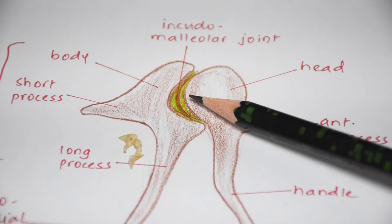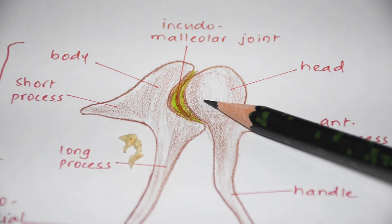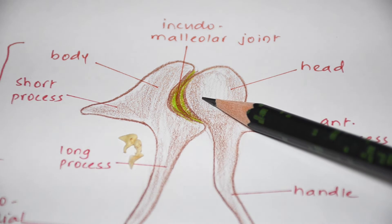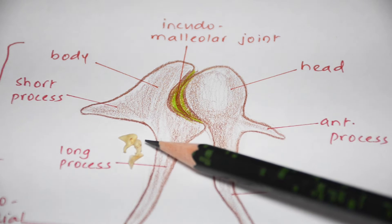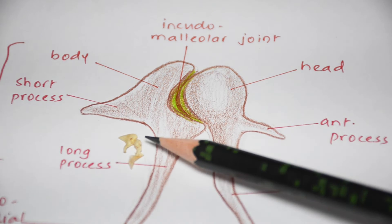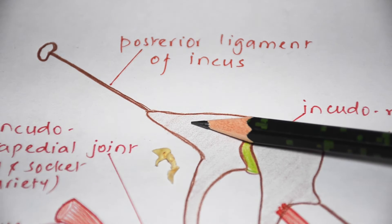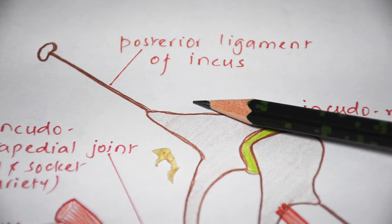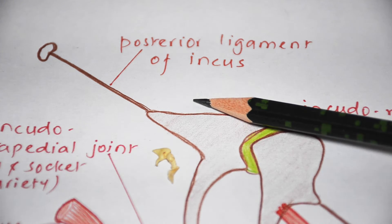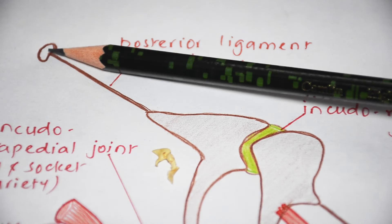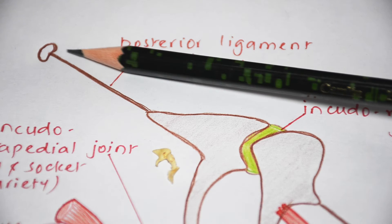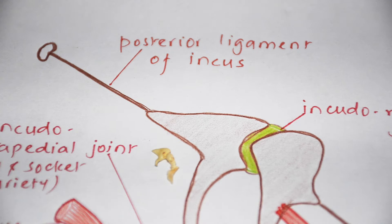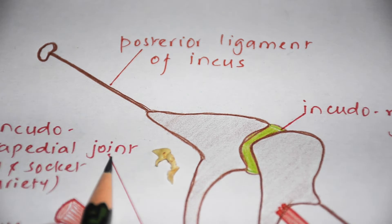The body of the incus articulates with the head of the malleus and together they form the incudomalleolar joint, which is the smallest saddle synovial joint. The short process projects backward and is connected by a ligament to the fossa incudis in the postero-inferior part of the epitympanic recess. You can see here the posterior ligament of incus connecting to the short process.